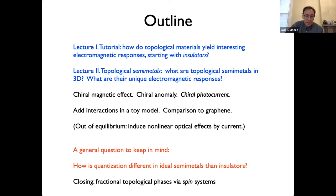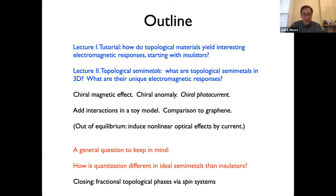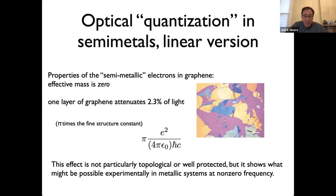The general question to keep in mind is how lectures one and two are connected, and in particular how quantization is different in an ideal semi-metal — one where the Fermi surface is just a couple of points. It's probably good to say what I mean by quantization: I don't have velocities or energy gaps; instead I have material-independent constants like e and h. A simple example is graphene: holding it up to light, you find it blocks about 2.3% — which is pi times 1/137, the fine structure constant in vacuum.